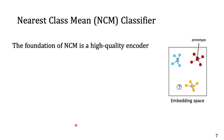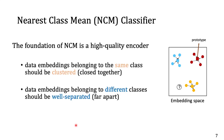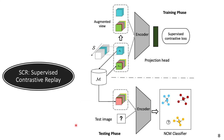To effectively use the NCM classifier, we need a high-quality encoder that generates good embeddings. That means embeddings from the same class should be close together, and those from different classes should be far apart. To this end, we propose SCR — supervised contrastive replay.